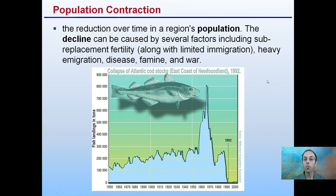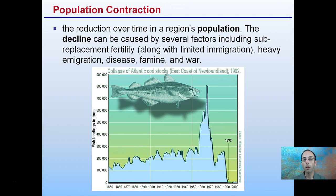Population contraction is a reduction over time of a region's population. The decline can be caused by under-replacement fertility, limited immigration, heavy emigration, disease, famine, or war. In the case of cod, there was an explosion in population in the mid-1960s to 70s, but in 1992 the population completely crashed off the east coast of Newfoundland. Cape Cod in Massachusetts has sometimes been called 'Cape No Cod' because of the missing cod population — a result of population contraction.